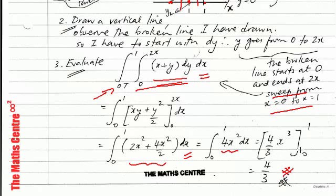To summarize the vertical line method: if you are going to start with dy, draw a vertical line, look at the smallest and largest values of x, and you can set up your limits for x.